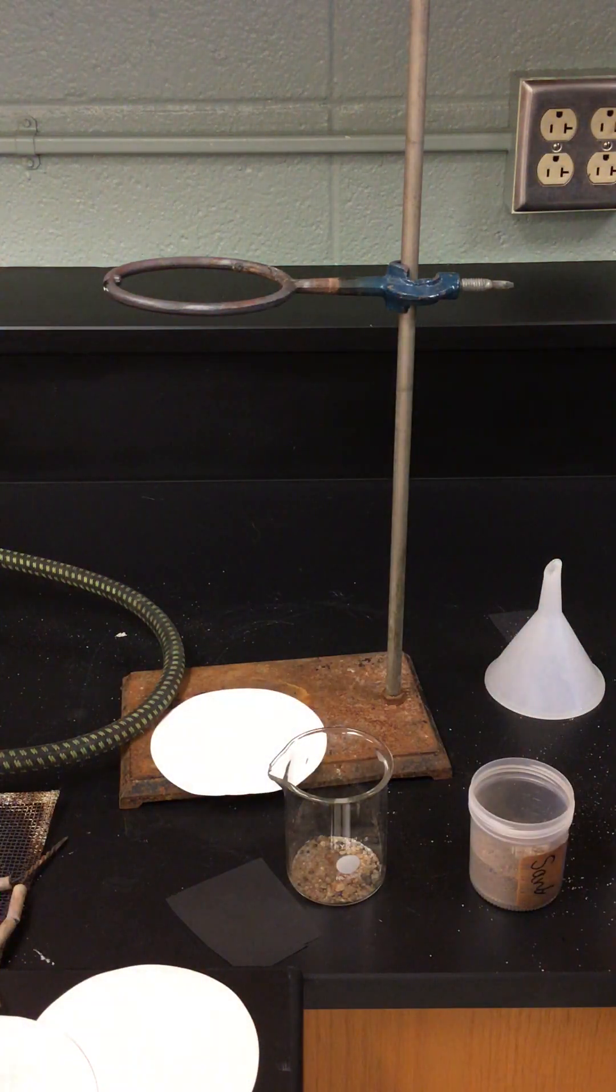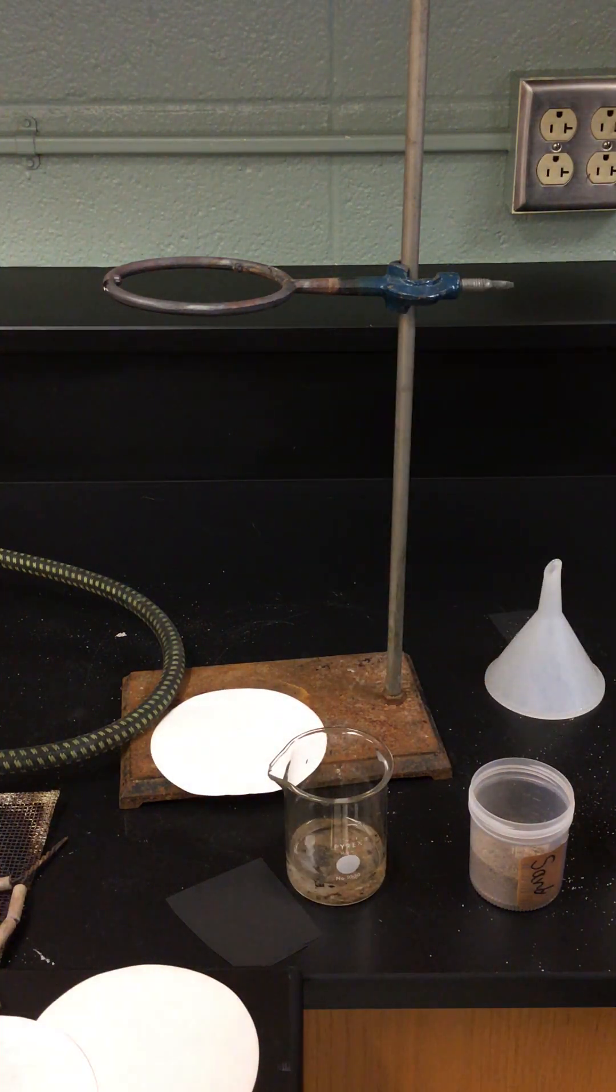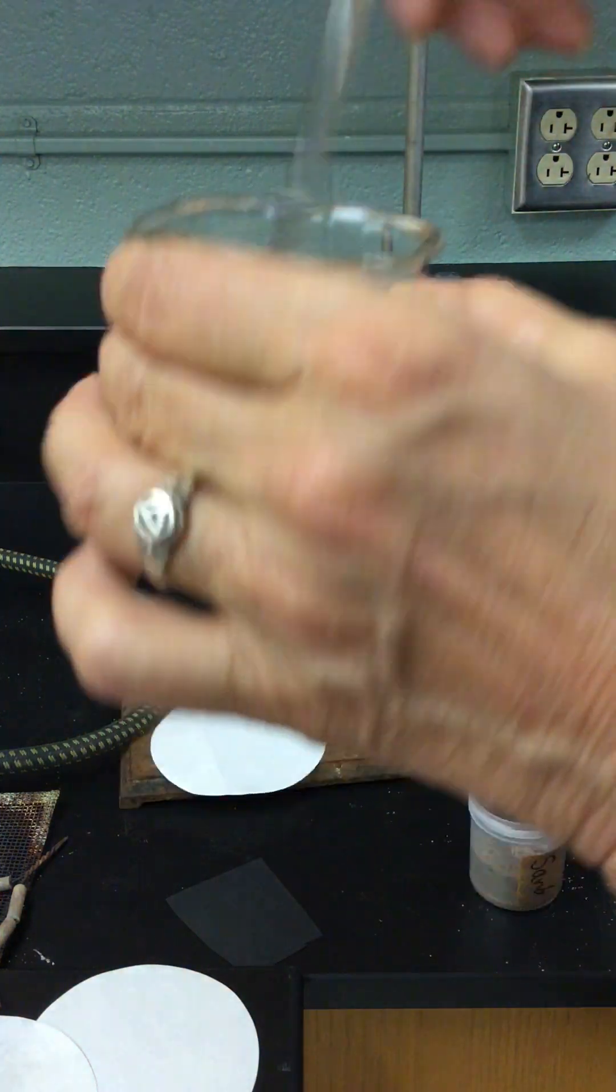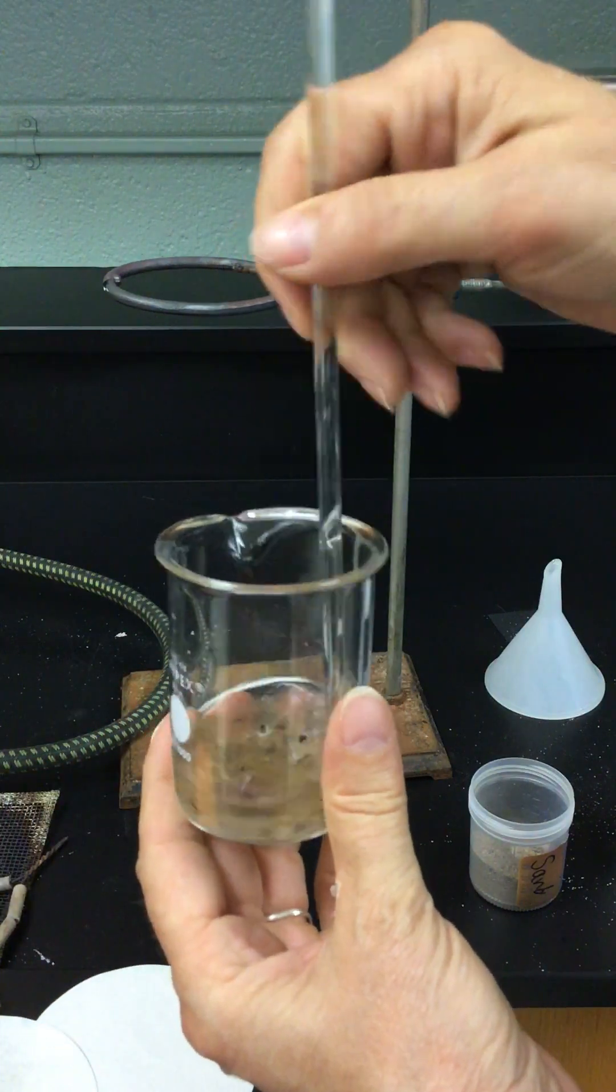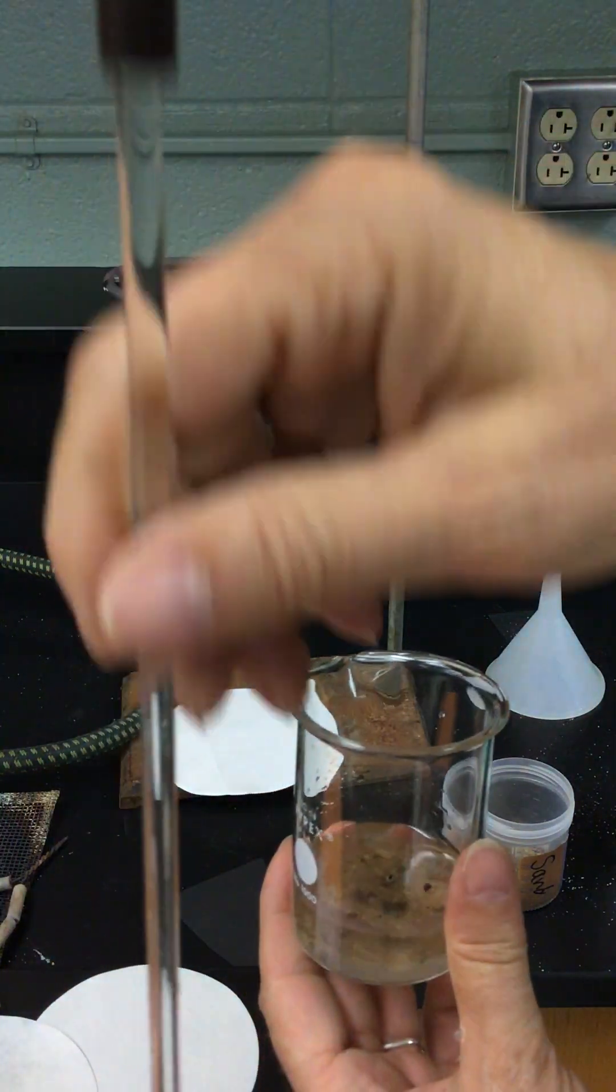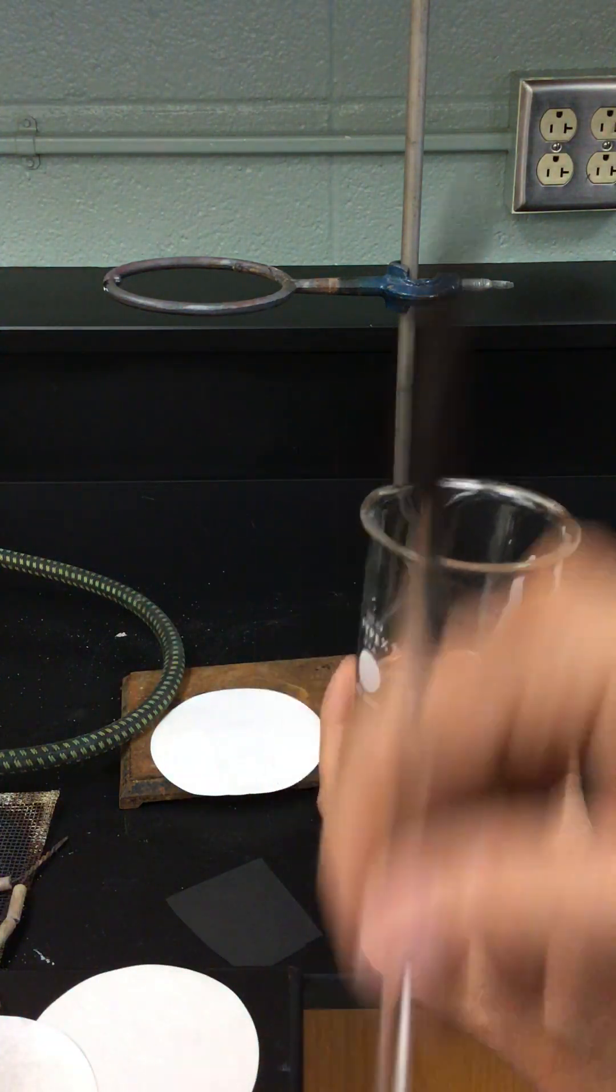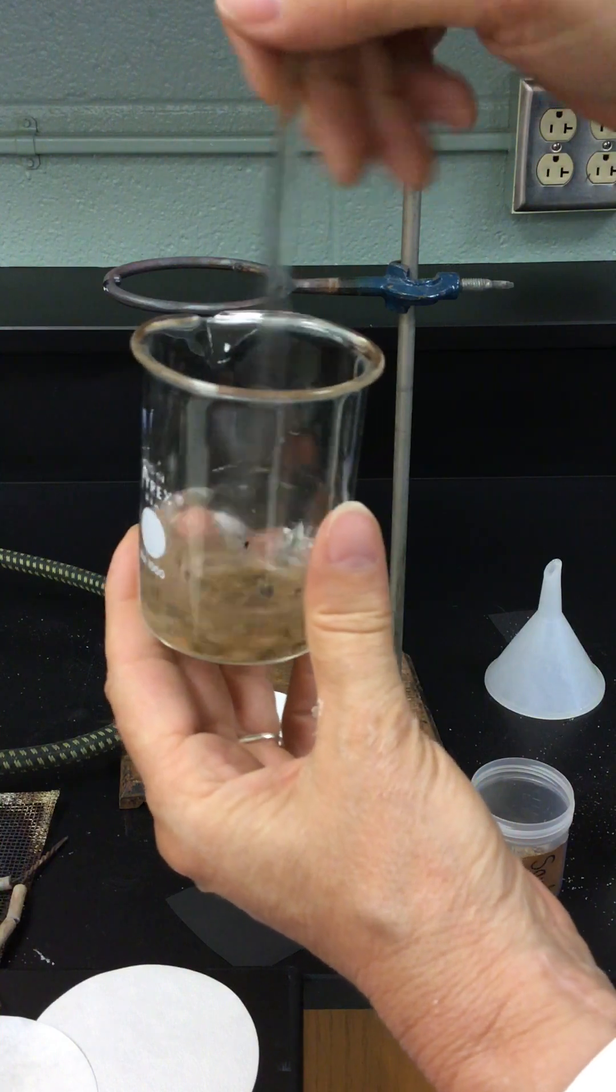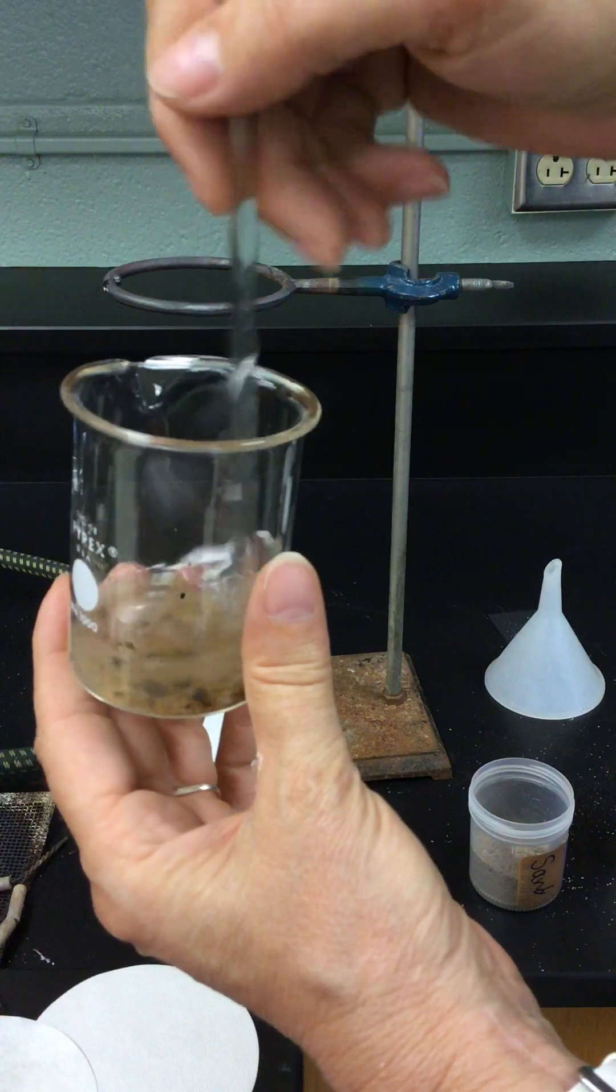Then we're going to place this in a beaker with some water. I'm going to cheat and pull the cap off this water and just pour some in. That's plenty. Then I'm going to stir this with this stir rod and a rubber policeman on top.